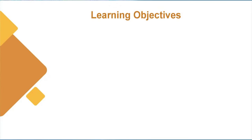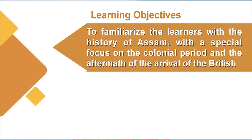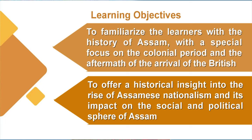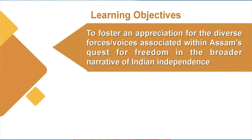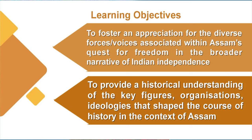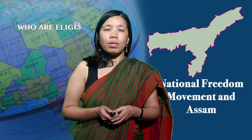The learning objectives of this course are to familiarize the learners with the history of Assam with a special focus on the colonial period and the aftermath of the arrival of the British. It also aims to offer a historical insight into the rise of Assamese nationalism and its impact on the social and political sphere of Assam, and to foster an appreciation for the diverse forces and voices associated with Assam's quest for freedom in the broader narrative of Indian independence, and to provide a historical understanding of the key figures, organizations, and ideologies that have shaped the course of history in the context of Assam.